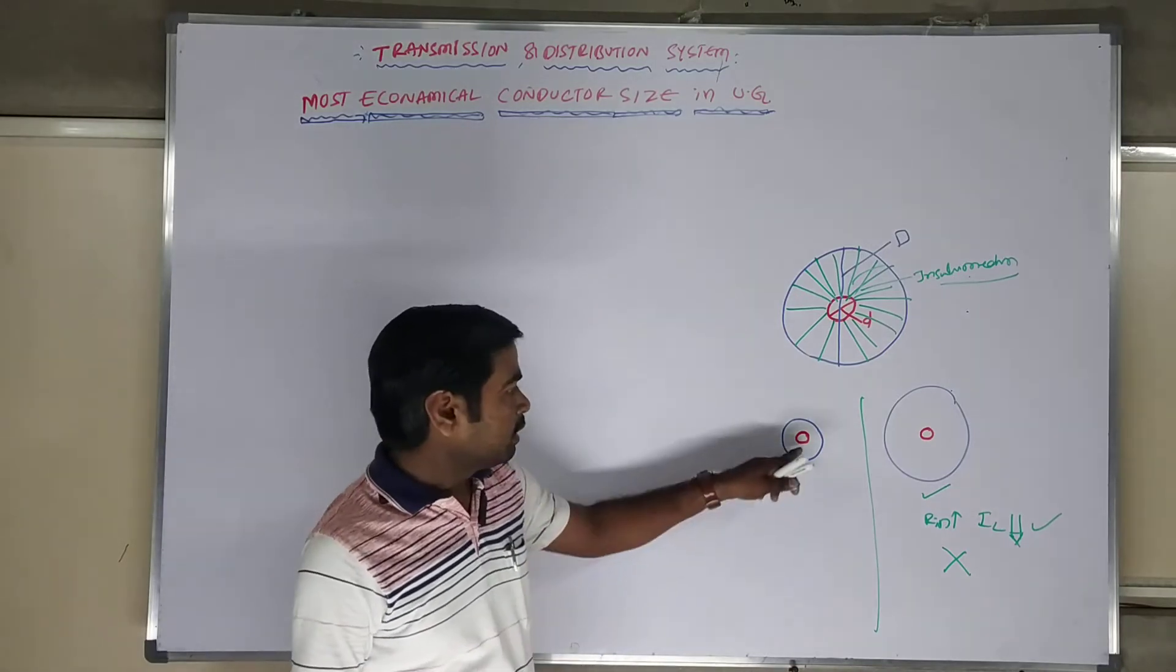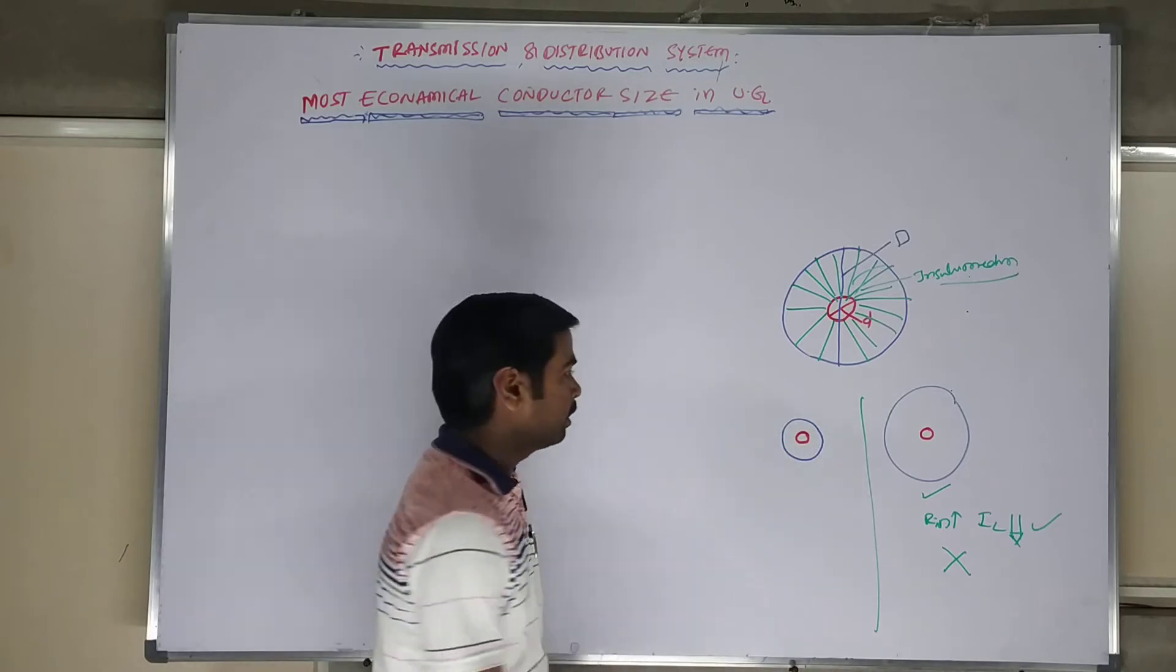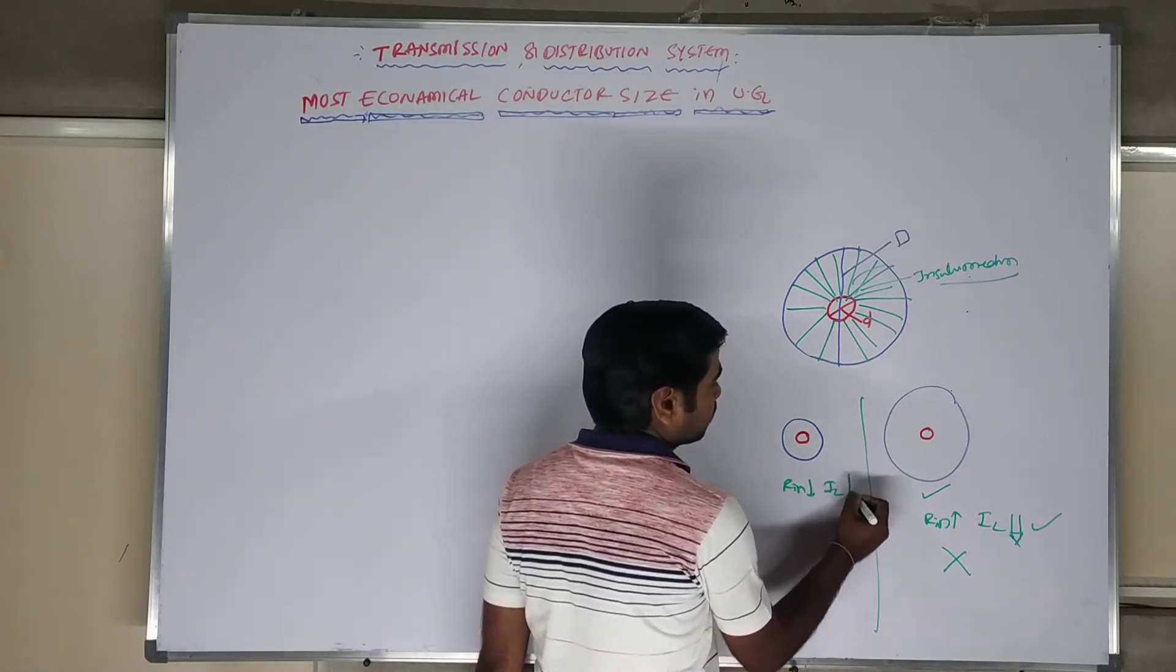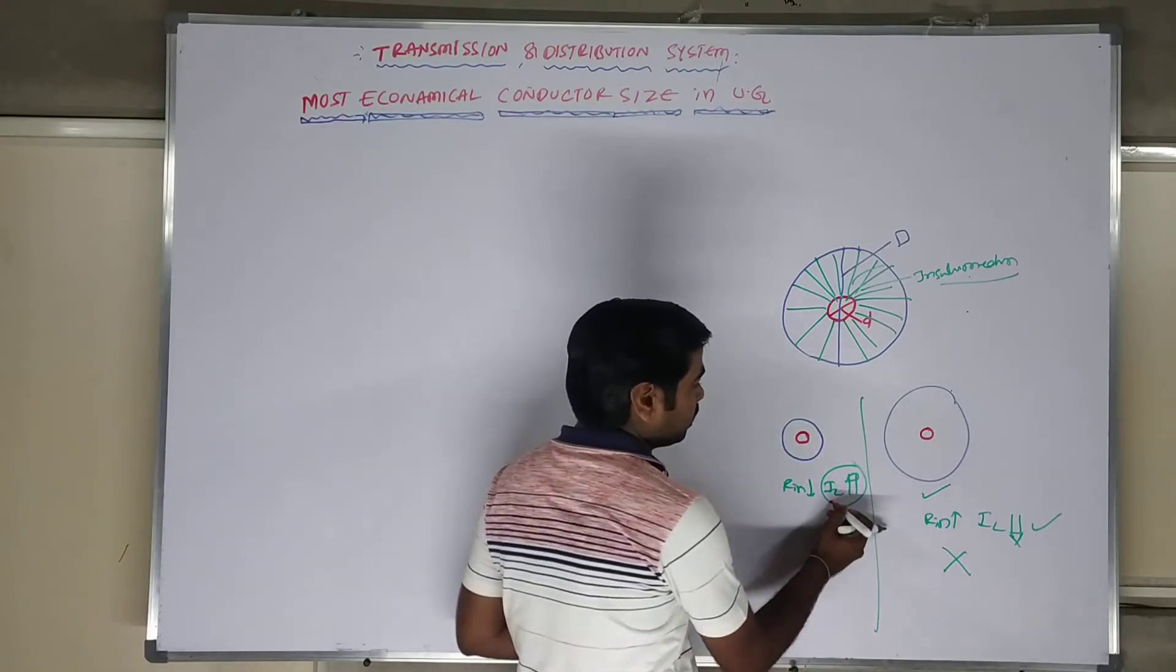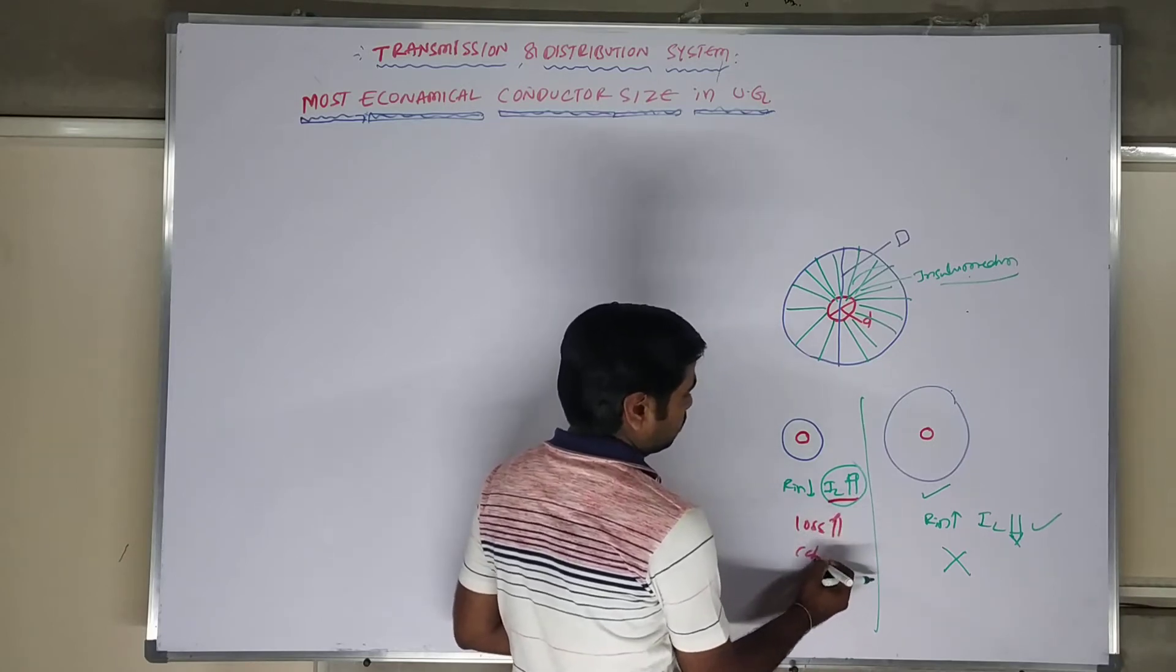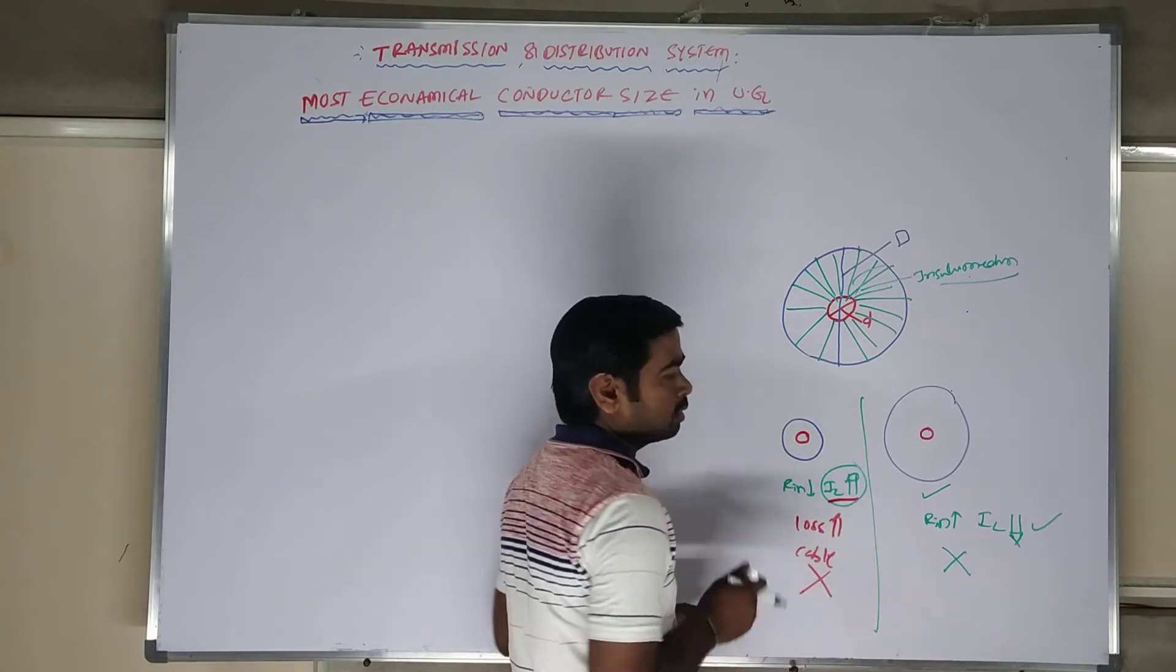In case 2, if you take the smaller radius of the sheath, our insulation is going to be reduced. The leakage current is going to be increased. The moment the leakage current is going to be increased, automatically losses will be going to take place. The cable will be going to be damaged. This is also not suggestible.